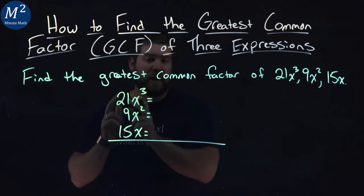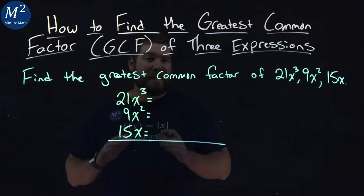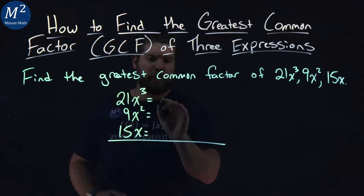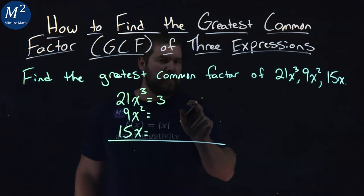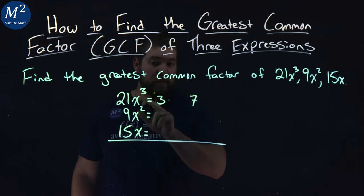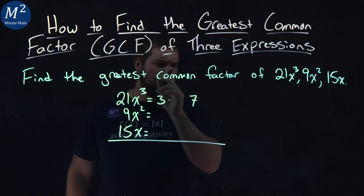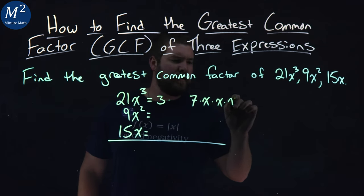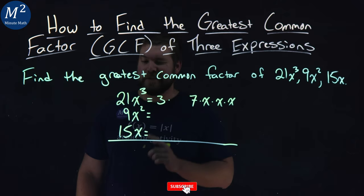21, let's start with that coefficient. 21 is 3 times 7. So 3, I'm going to give it some space, times 7. From there, x cubed is next. x cubed is x times x times x, three x's.